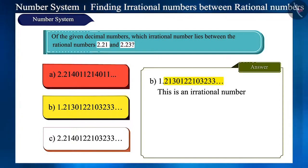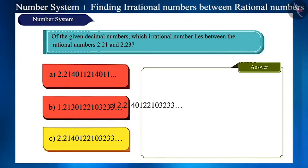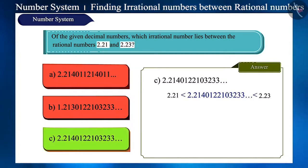And if we shift our focus to the left of the decimal, then there is 1, which means it is not located between the two numbers. And now the remaining option is C, which is an irrational number and lies between these two rational numbers.